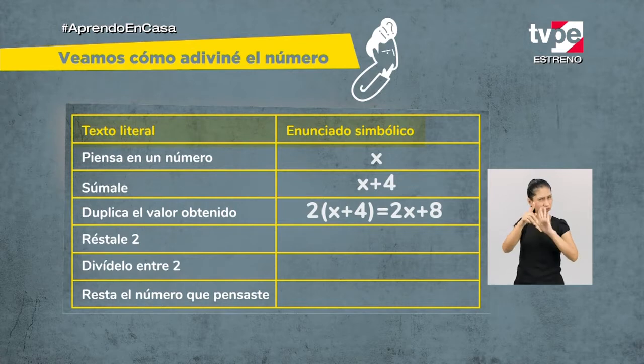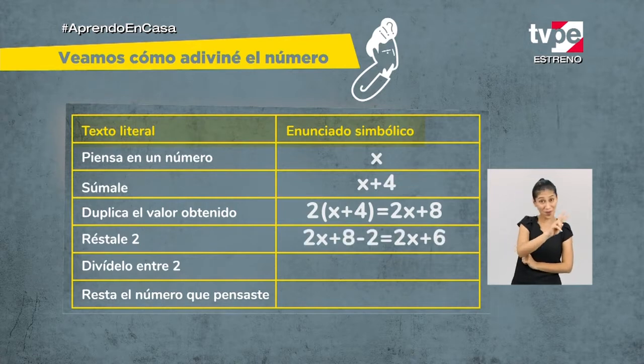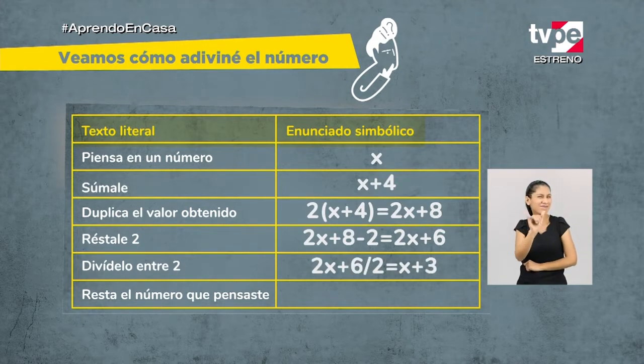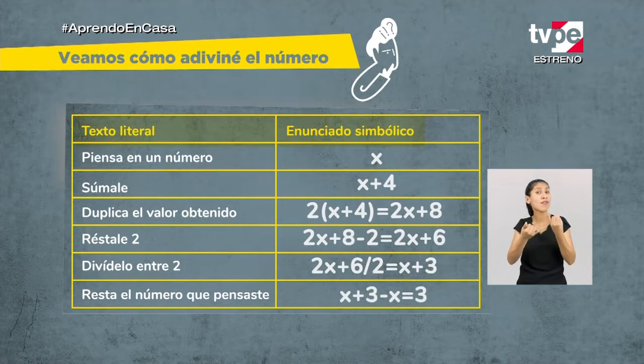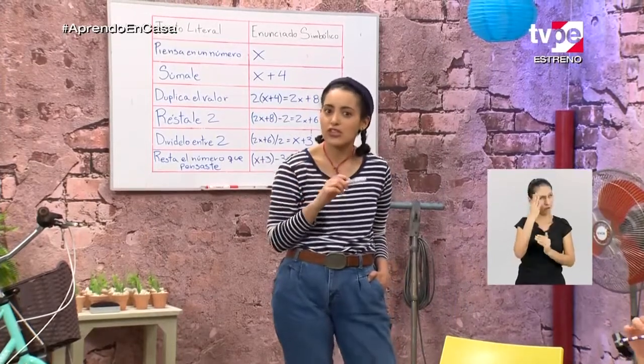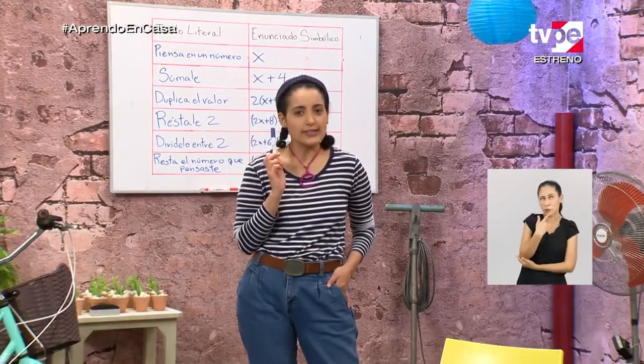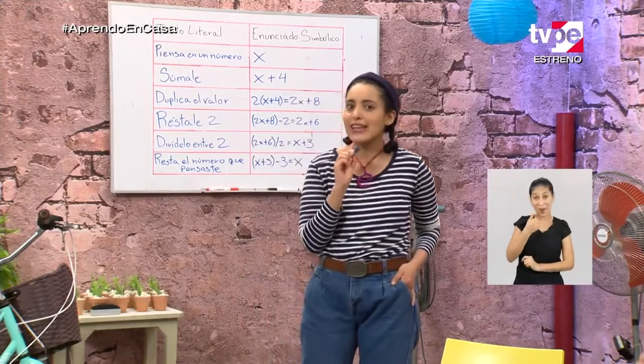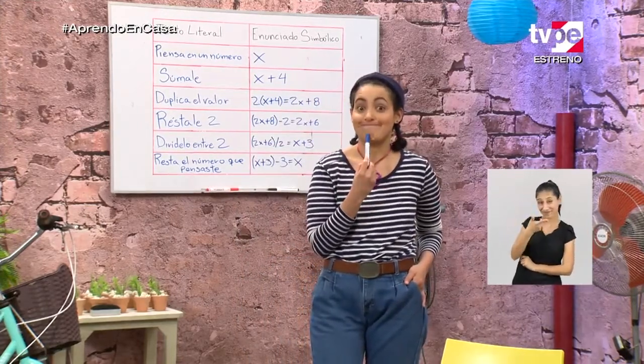Y si le restamos dos, ahí tenemos veintidós. Si después lo dividimos entre dos, resulta once. Y si le restamos el número que pensamos al inicio, ocho, el resultado es siempre tres. Creo que debemos saber expresar ciertas situaciones en términos algebraicos y resolver las ecuaciones e inequaciones. Las ecuaciones son igualdades. ¿Y las inequaciones, desigualdades? Para corroborarlo, ¿qué tal si llamamos a la profesora?